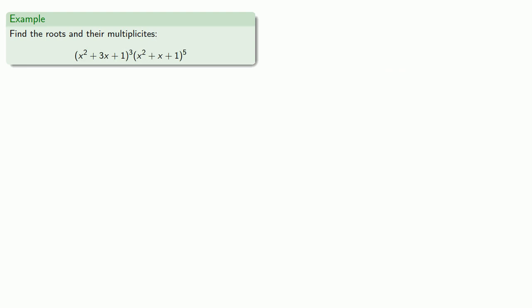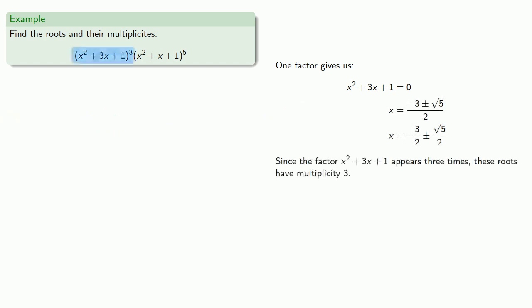Or let's consider a polynomial like this. So the roots come from the factors, so one of these factors gives us... And since the factor x squared plus 3x plus 1 appears 3 times, then these roots have multiplicity 3.